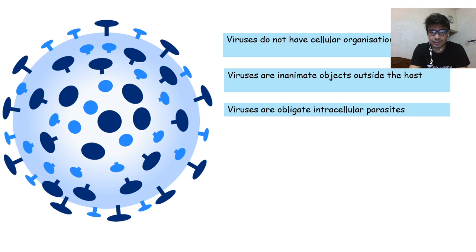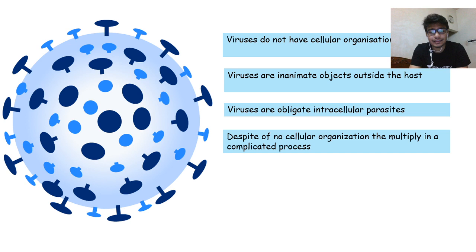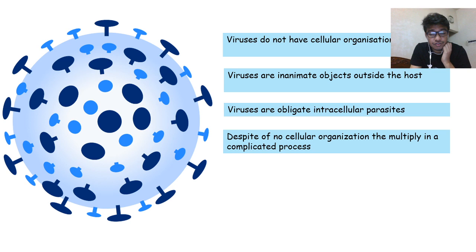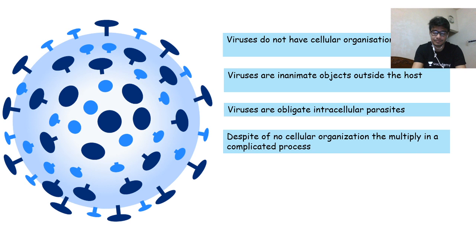Viruses are obligate intracellular parasites — they are totally dependent on the host cells for their own entity and life. Despite no cellular organization, their mode of reproduction is not simple like binary fission. Their reproduction ways are pretty sophisticated and most of these ways hijack our own cellular machineries. A quick fact: there are more RNA viruses than DNA viruses.